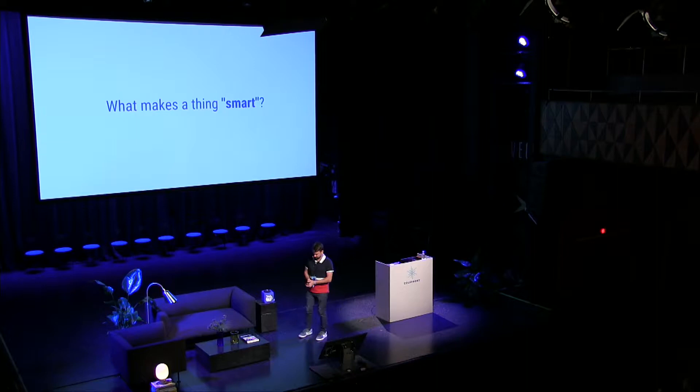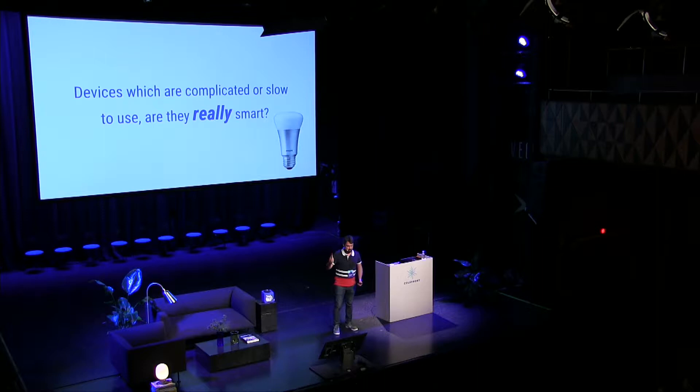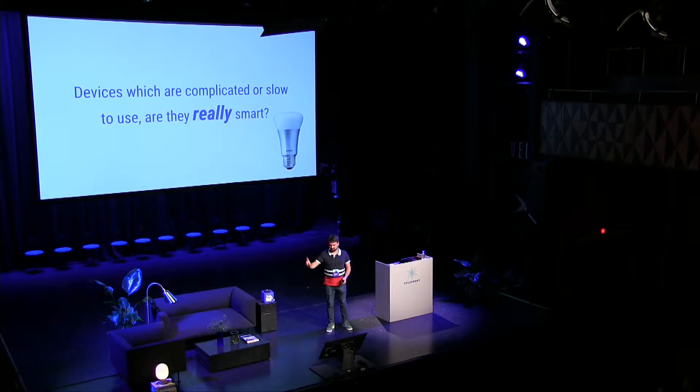We're here today to talk about smart devices. What makes a device smart? Is it really smart that if I want to turn off the light, I need to pick up my phone, unlock it, find the app, wait for it to load? Maybe that's not so smart, because we already have a small switch we can just click and the light turns off. So we really need to think about whether we're solving real issues.